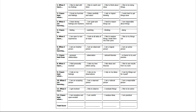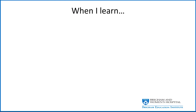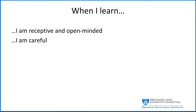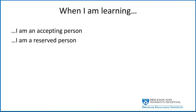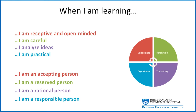When using the Kolb experiential model, students are usually first given a questionnaire. For example: 'When I learn' — and the choices are 'I am receptive and open-minded,' 'I am careful,' 'I analyze ideas,' or 'I am practical' — and you rank order these from one to four. Or: 'When I'm learning, I'm an accepting person, a reserved person, a rational person, or a responsible person.' How you rank these helps you understand where you fall in Kolb's experiential model — receptive and open-minded suggests the experiential domain, while careful and reserved suggests a reflector style.